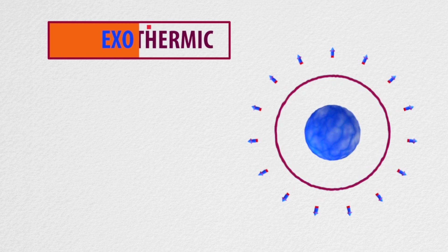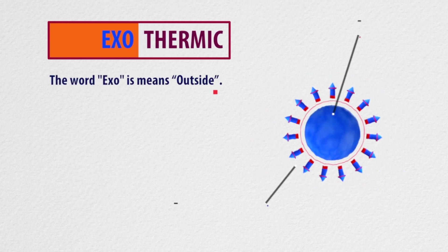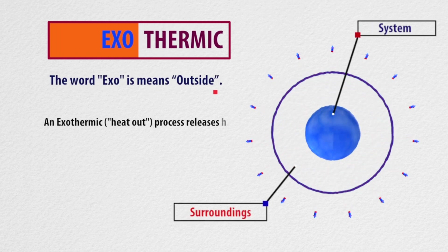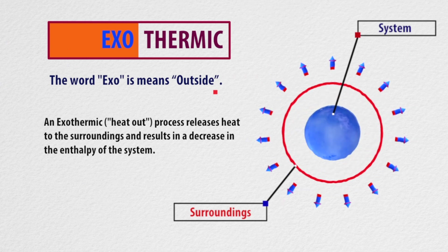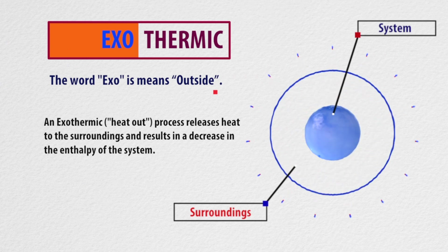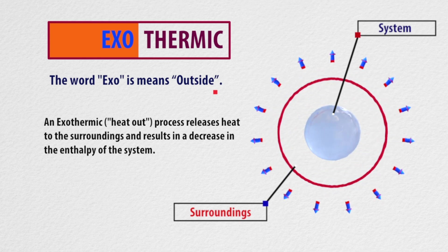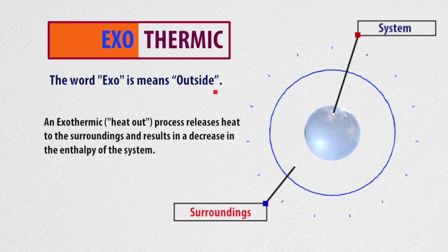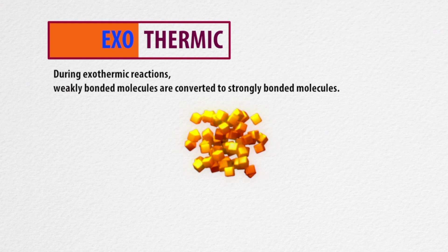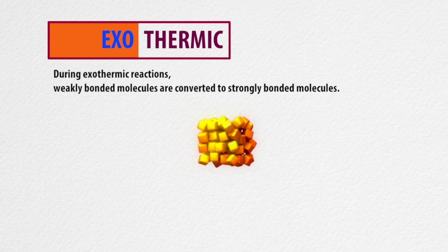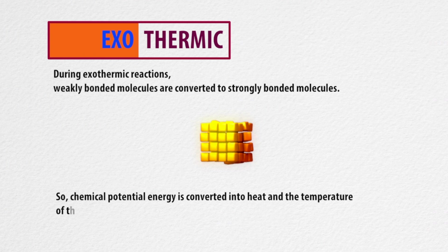Exothermic reactions. The word 'exo' means outside. An exothermic process releases heat to the surroundings and results in a decrease in the enthalpy of the system. During exothermic reactions, weakly bonded molecules are converted to strongly bonded molecules. So chemical potential energy is converted into heat and the temperature of the surroundings increases.